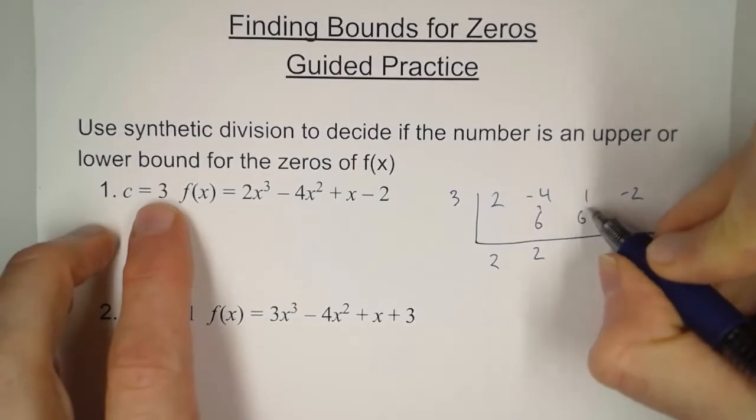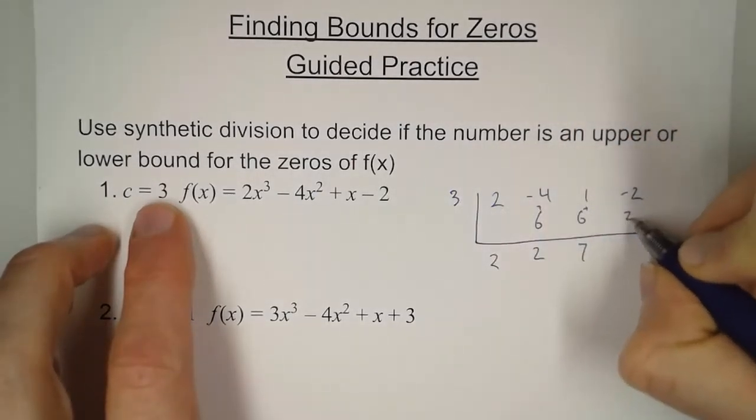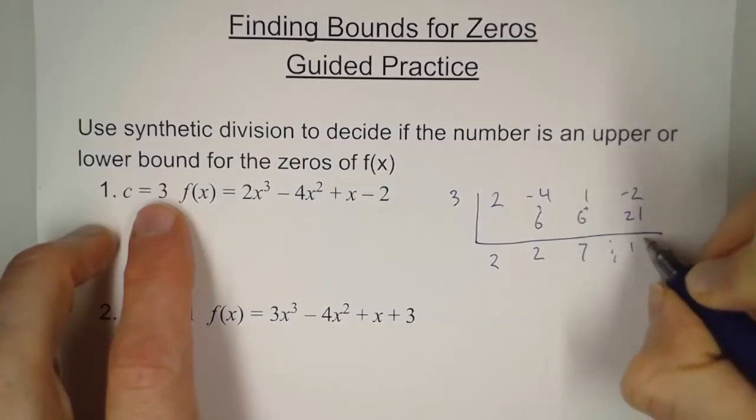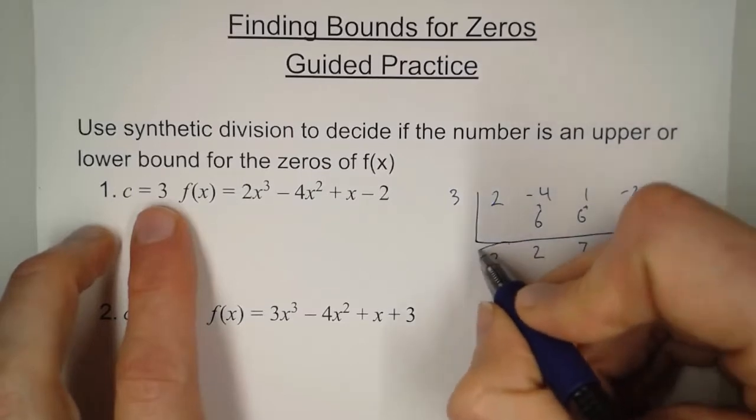Times 3 is 6, add these two, we get 7. Times 3 is 21. So we get a remainder of 19. So obviously, this is not a zero.